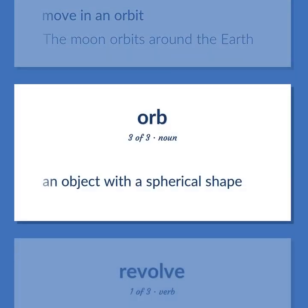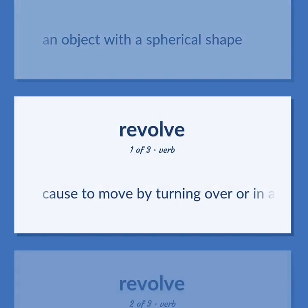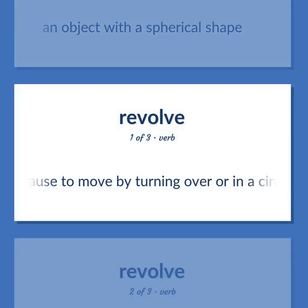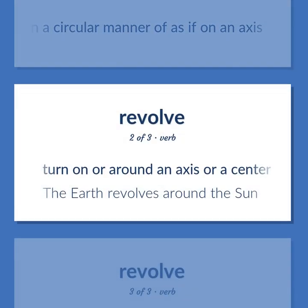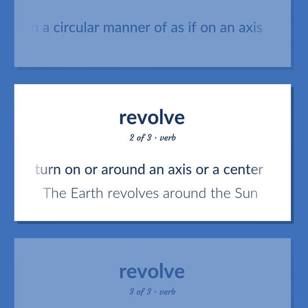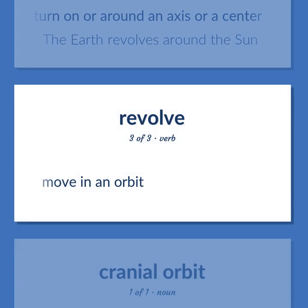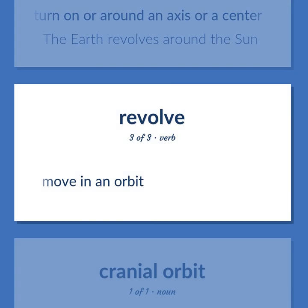Sphere and Revolve: An object with a spherical shape. To move by turning over or in a circular manner as if on an axis. To turn on or around an axis or a center — the Earth revolves around the Sun. To move in an orbit.